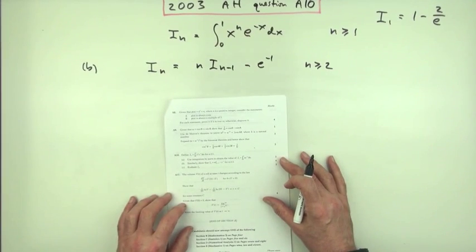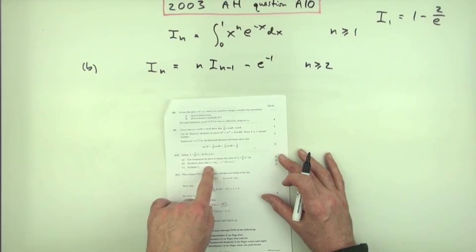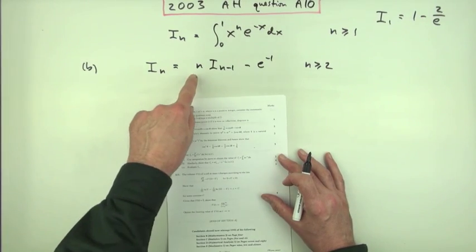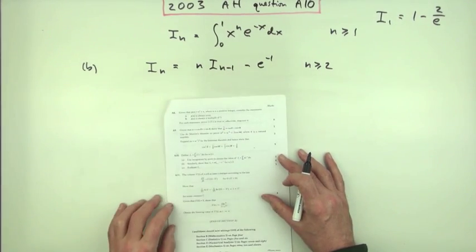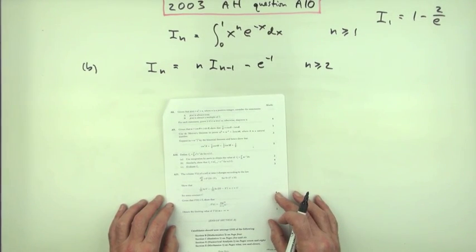So part b. Part b, it says similarly, so you're still going to be using integration by parts, show that i_n is n times i_(n-1) minus, I don't like that wee thing there, e to the power of negative 1, 1 over e.